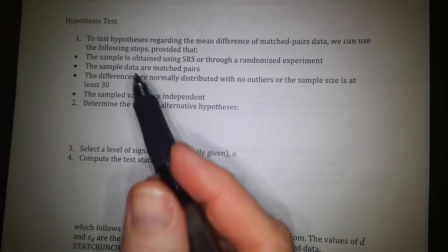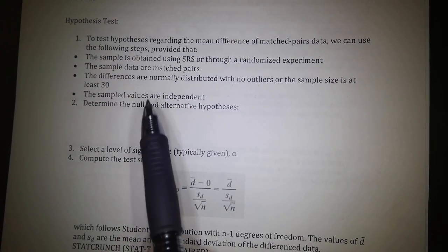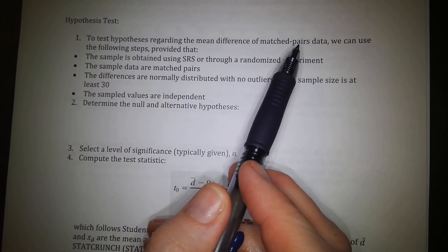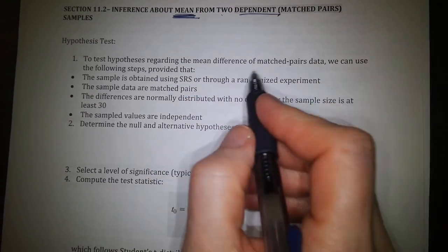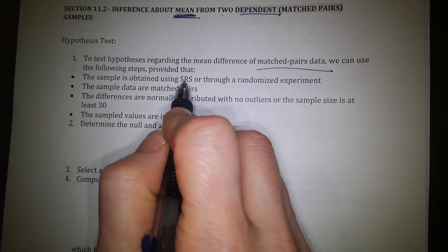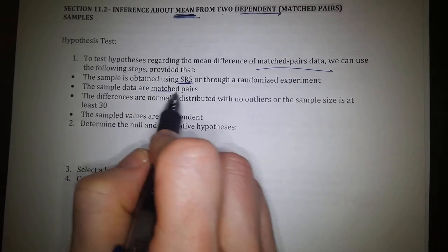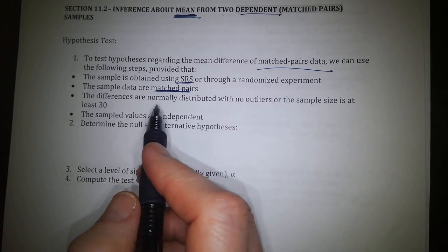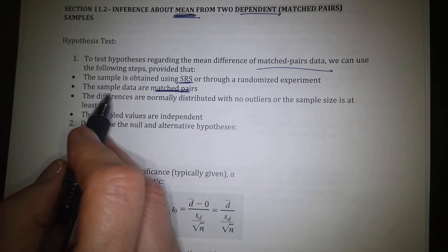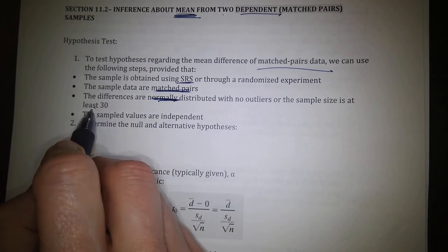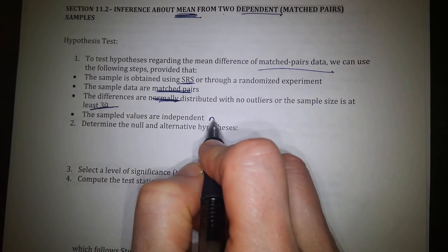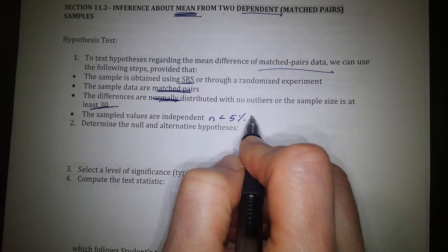First is the hypothesis test. You are all familiar with the seven-step procedure by now. The requirements to test the hypothesis regarding the mean difference of matched pairs data — because we're discussing dependent samples, so they are matched pairs — are as follows: the sample must be randomly selected, the sample data must be matched pairs (in other words, dependent on each other), the differences are normally distributed with no outliers or the sample size is at least 30, and the sample values are independent of the population, meaning the samples have to be less than 5% of all.